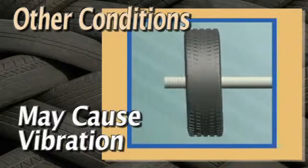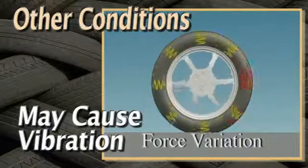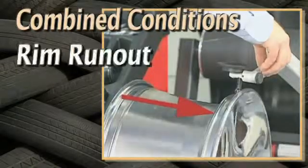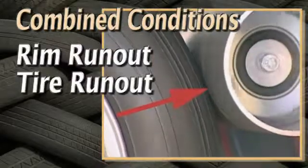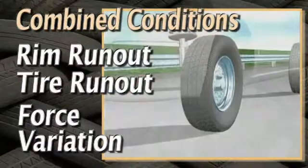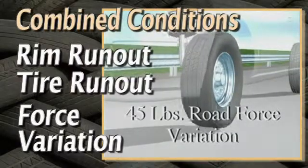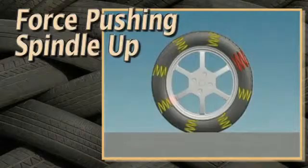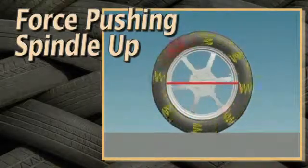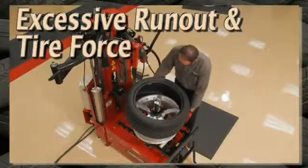Other wheel and tire conditions causing vibration are run out and tire force variation. When you combine run out at the rim, run out at the tire, and then tire force variation, it's possible to have as much as 45 pounds of total road force variation in the wheel assembly. This is 45 pounds of force pushing up on the spindle for every wheel revolution.